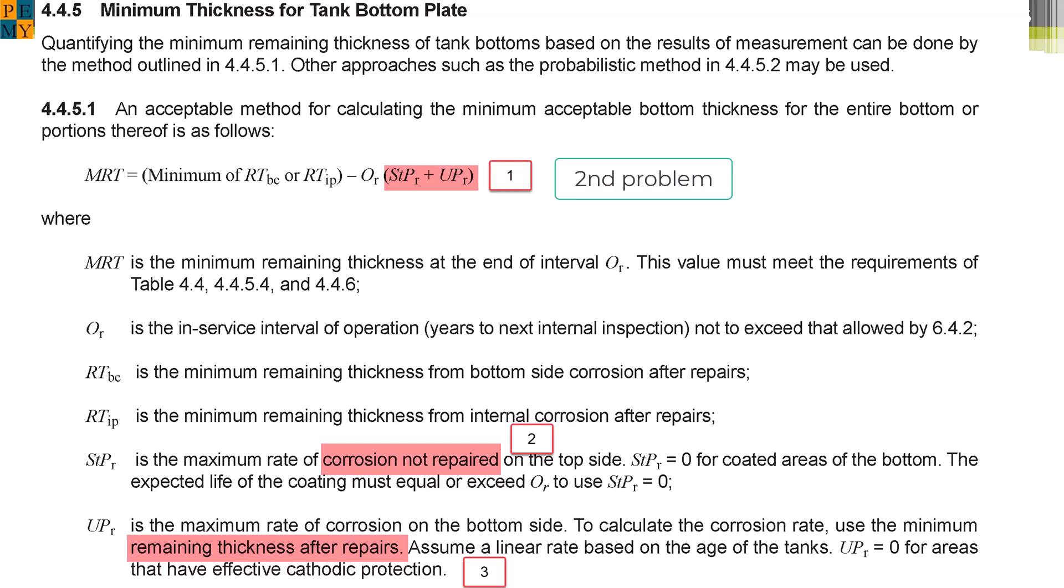The second problem is the summing of the corrosion rates from the top side and bottom side. The third and most significant problem is that the top side and bottom side calculations of corrosion rates are not corrosion rates at all, but an artifact of an algorithm.